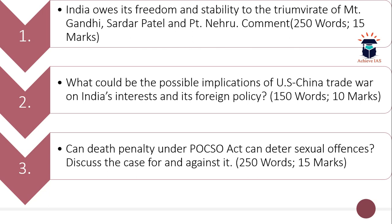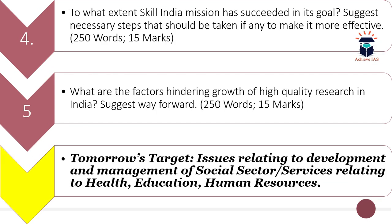Your third question is: 'Can death penalty under the POCSO Act deter sexual offenses? Discuss the case for and against it.' Here you have to focus on the issue of death penalty and whether it can solve the problem of sexual offenses. The word limit is 250 and the maximum marks are 15.